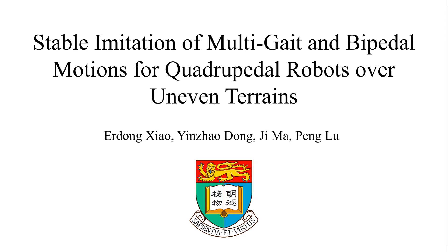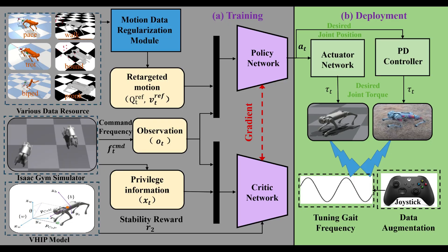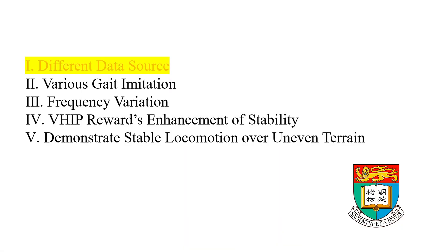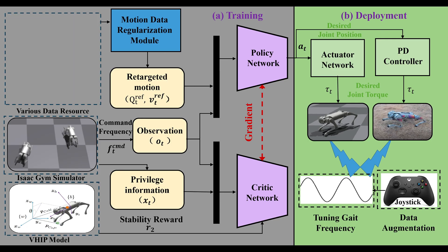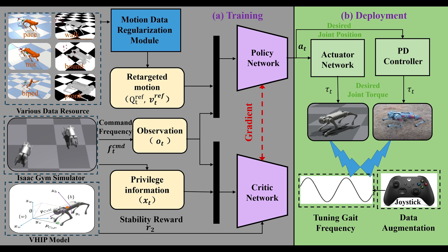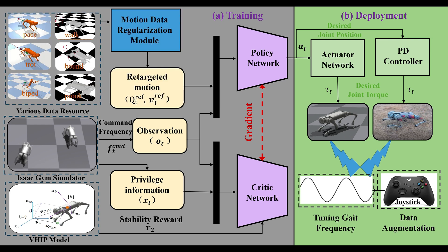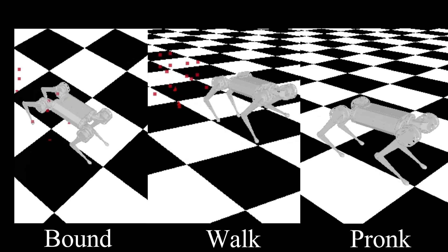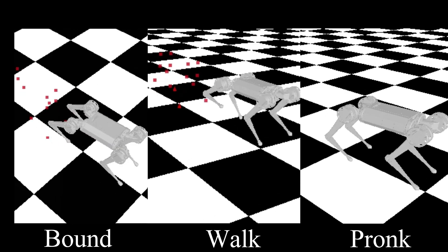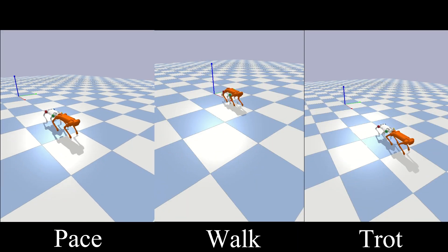In this video, we propose a stable imitation learning framework based on reference motion data. Our framework can handle various data sources from different simulators, gaits, and controllers. We design a unified LSTM data regularization module to achieve noise filtering and motion retargeting in one step.